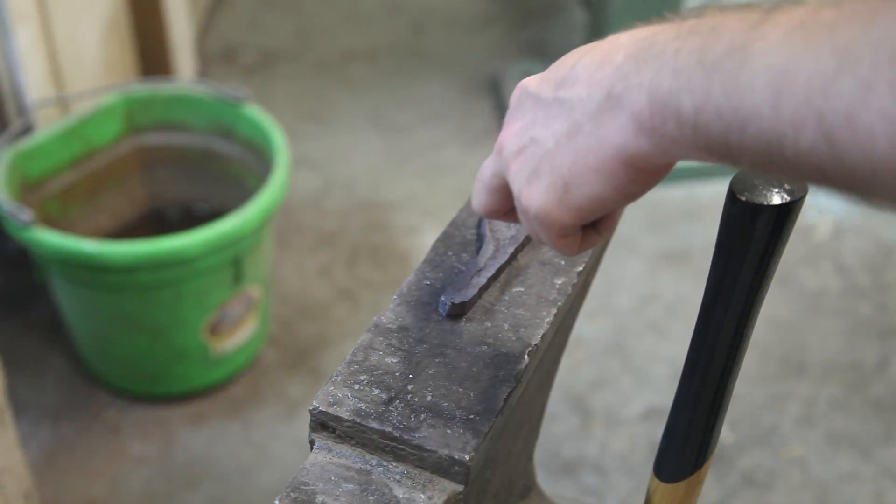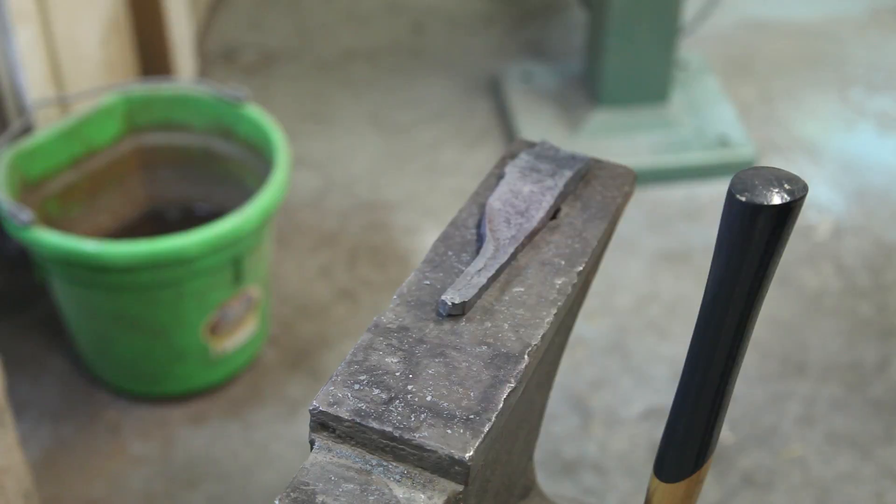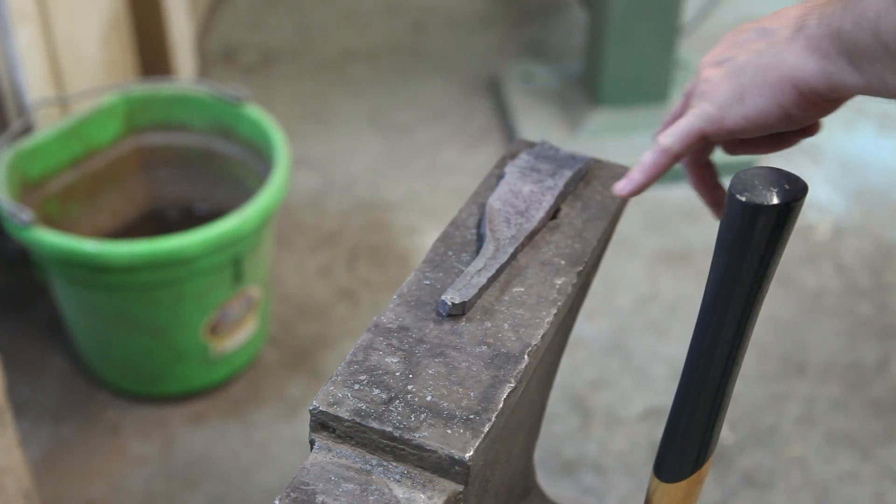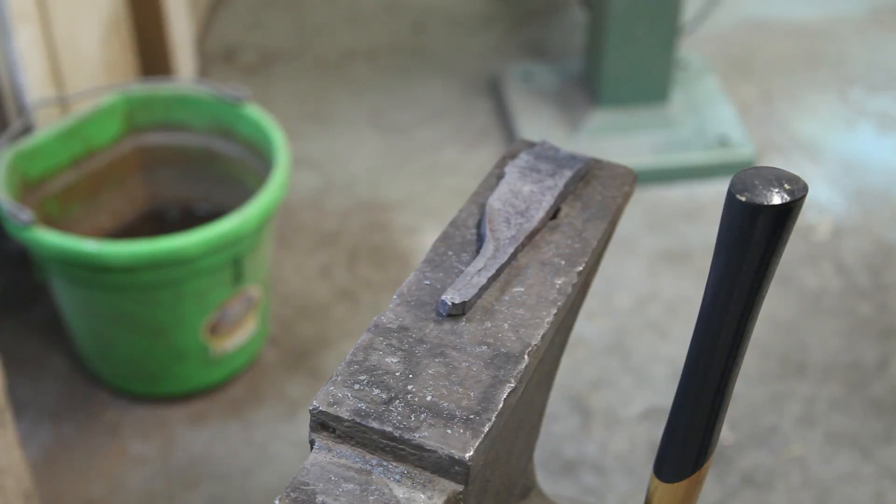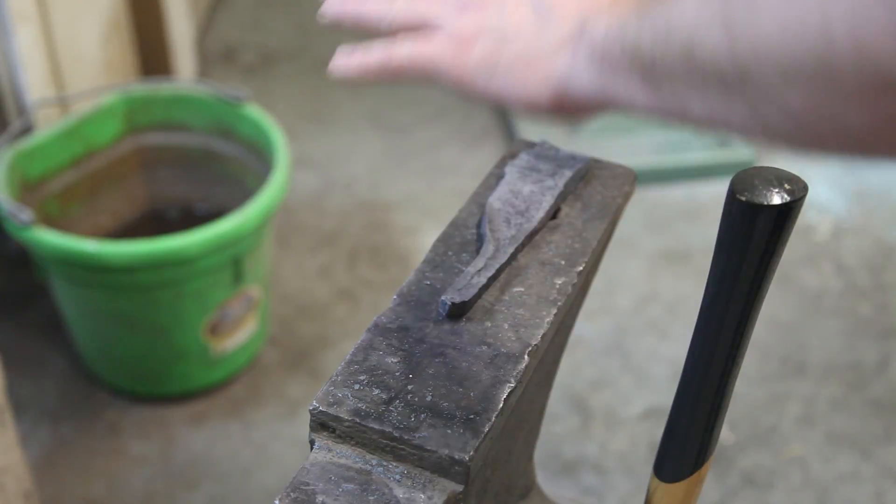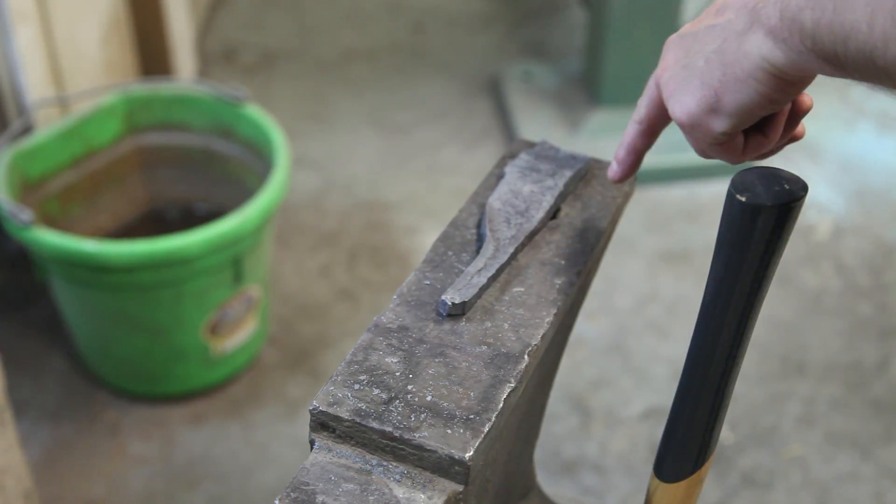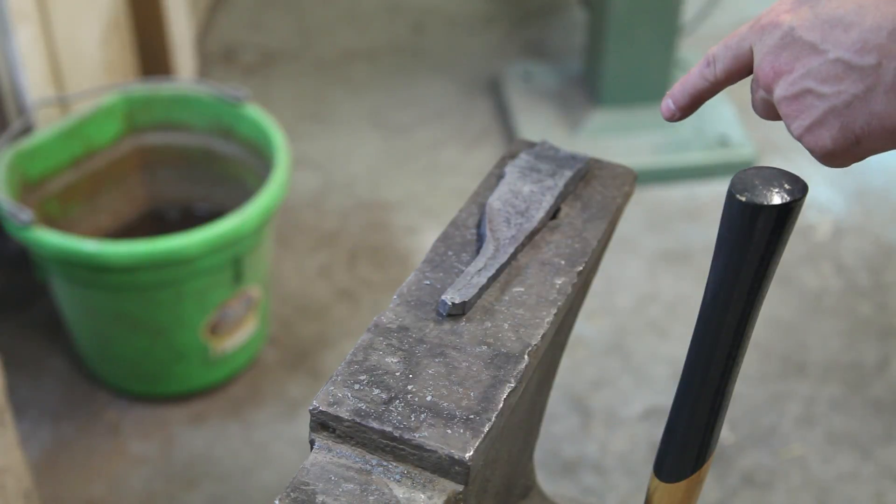So I've drawn out a tang. The German knife laws specify that you can only have about a four inch, four and a half inch blade or so. So that's what I'm planning. What I'm going to do now is I'm going to surface grind some of this and define where the tang starts and stops a little bit better. And then I will come back and forge in the tip and try to forge in some bevels.